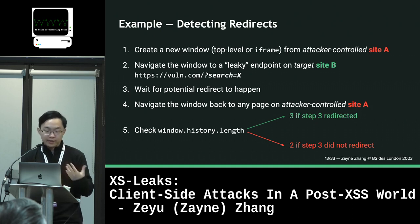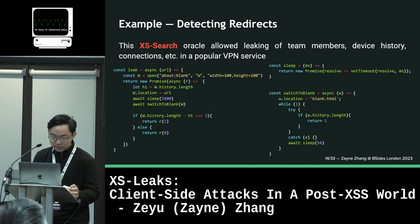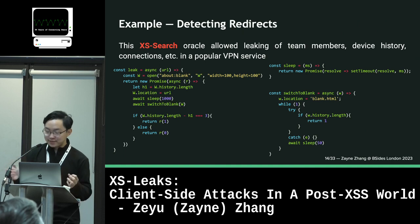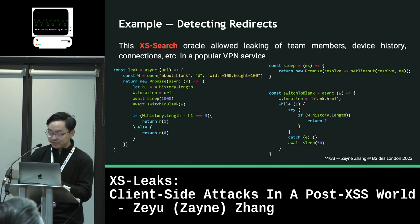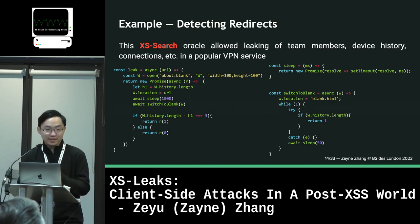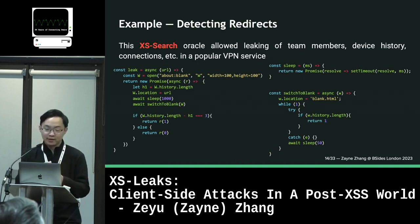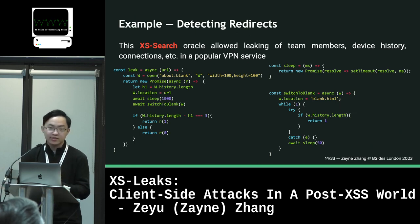The history length would be three if in step three the target endpoint redirected — you have one redirect when you redirect the window to the target website, a second redirect by the target website which you want to test for, and a third redirect back to your own site. If it didn't redirect in step three, you would just have a length of two. This is a really simple technique but it's really powerful. I couldn't reveal which client this was, but this is the full POC and it allowed us to leak team members, device history, connections, etc. in a popular VPN service.